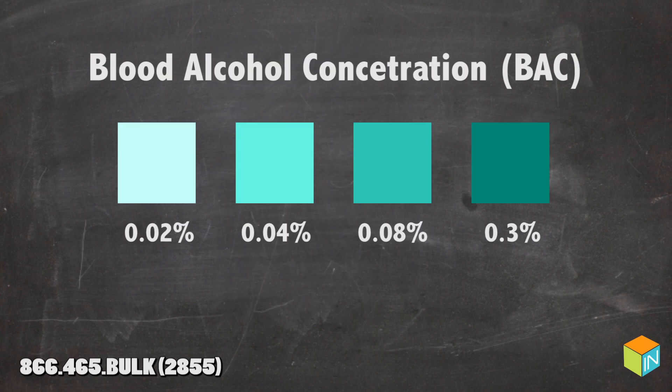The test strip estimates a BAC at the 0.00%, 0.02%, 0.04%, 0.08%, and 0.3% levels. Results are used in the diagnosis of alcohol use or intoxication.